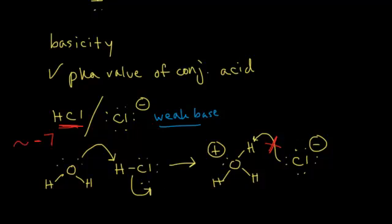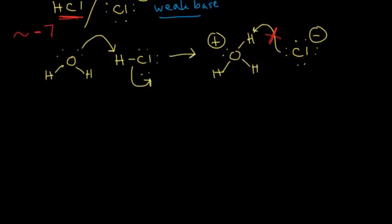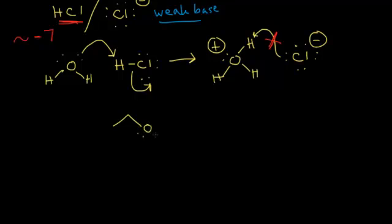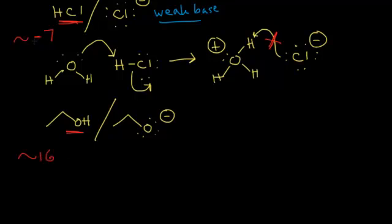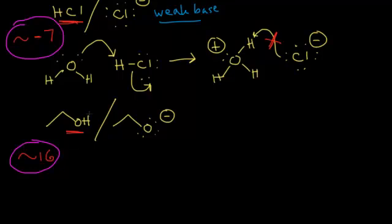Let's look at ethoxide now. To figure out if the ethoxide anion is a strong or weak base, we draw it with its negative charge and consider the conjugate acid. Adding a proton to ethoxide gives ethanol. The pKa of ethanol is approximately 16, which compared to hydrochloric acid's pKa of negative 7 is much, much less acidic. So ethanol, while it can function as an acid, is a relatively weak acid. If you have a relatively weak acid, you have a relatively strong base — so the ethoxide anion is a relatively strong base. This is true for all alkoxide anions; they're relatively strong bases.